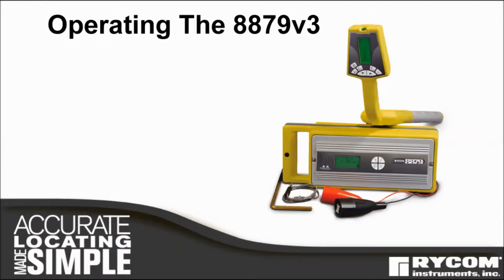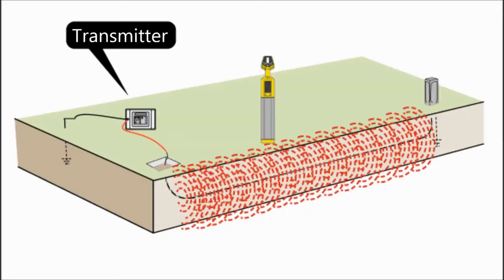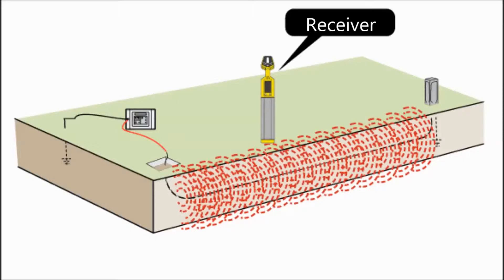This video will introduce you to the operation of the 8879 V3 cable and pipe locator. The basic principle of operation: a transmitter applies an electrical current to a buried conductor, then a receiver is used to detect the electromagnetic field radiating from the underground conductor.